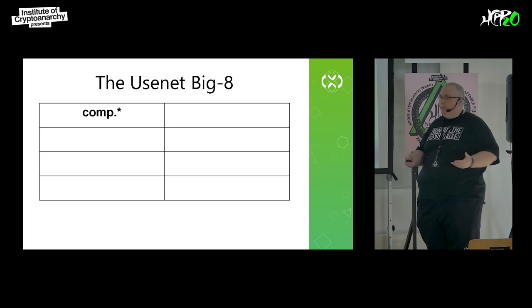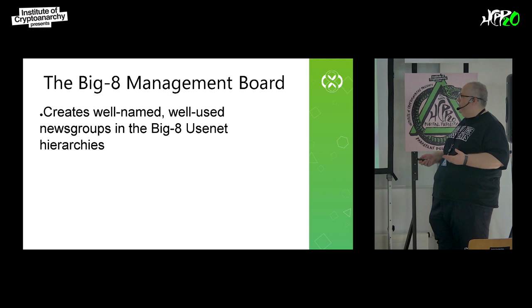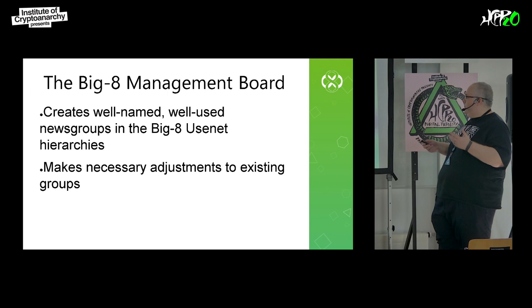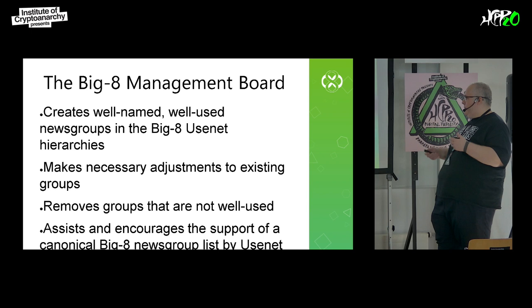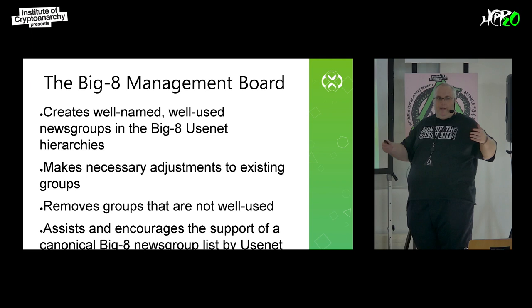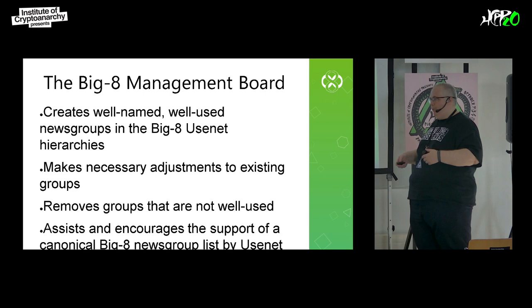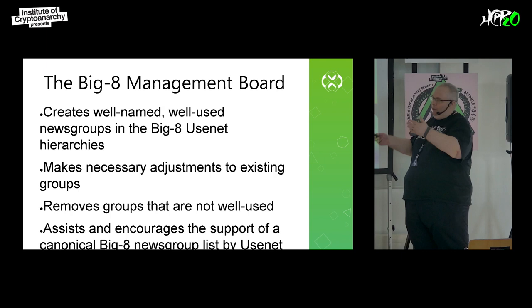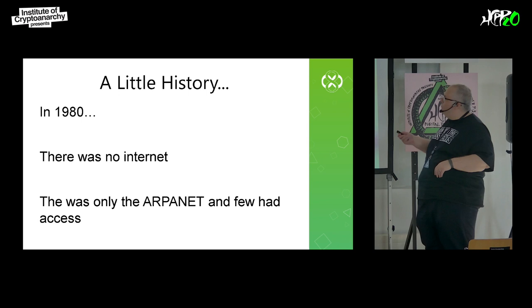This is what my group, the Big Eight management board, is responsible for. What we do is we create well-named, well-used newsgroups in these Big Eight hierarchies. We make necessary adjustments to existing groups, we remove groups that are not well used, and we assist and encourage servers to use the canonical Big Eight group list. If some server admin didn't want to carry a specific group, that's fine — we can't make them. But if somebody is just not updating or removing groups as we organize them, we try to work with them to keep everybody on the same line.